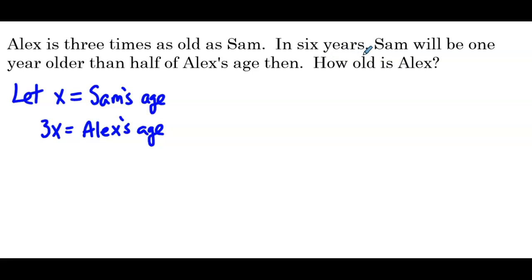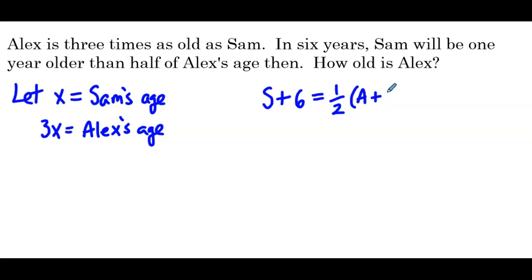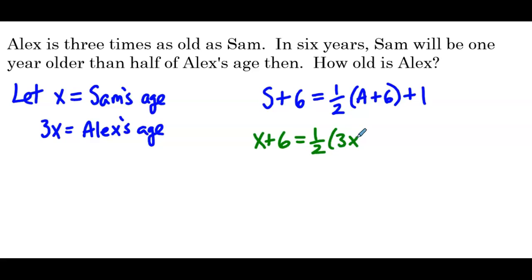In six years, Sam's age will be x plus 6. He's going to be one year older than half of Alex's age then. Alex's age in six years is 3x plus 6, and one year older than that is plus 1. So our equation is x plus 6 equals one half times 3x plus 6, plus 1.